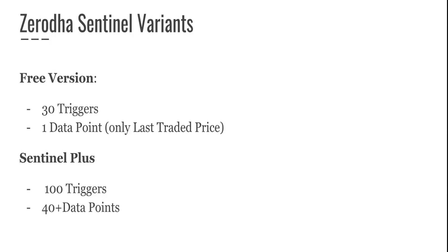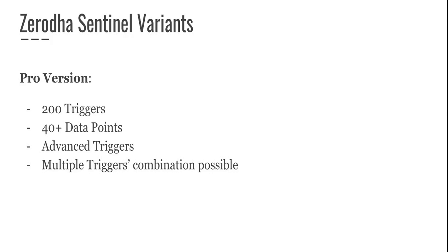There are different pricing models and versions. There is a free version that comes with 30 triggers and only one data point — last traded price. Then there is Sentinel Plus, with around 100 triggers and around 40 data points. There is also a Pro version with 200 triggers, 40-plus data points, and advanced triggers that allow different permutations and combinations of data points, where multiple triggers can be combined with each other.